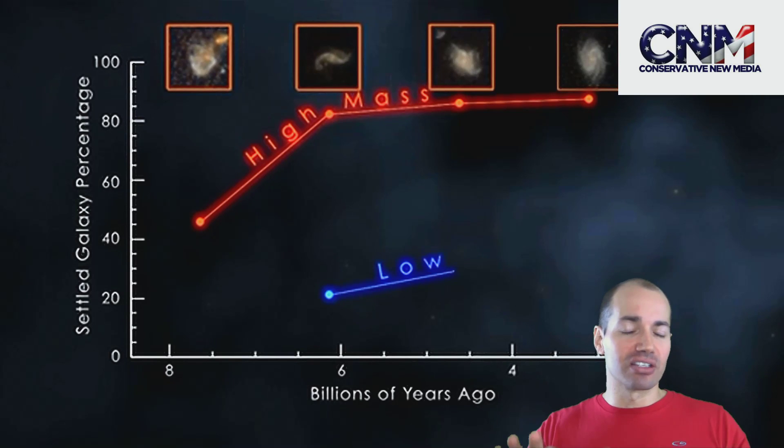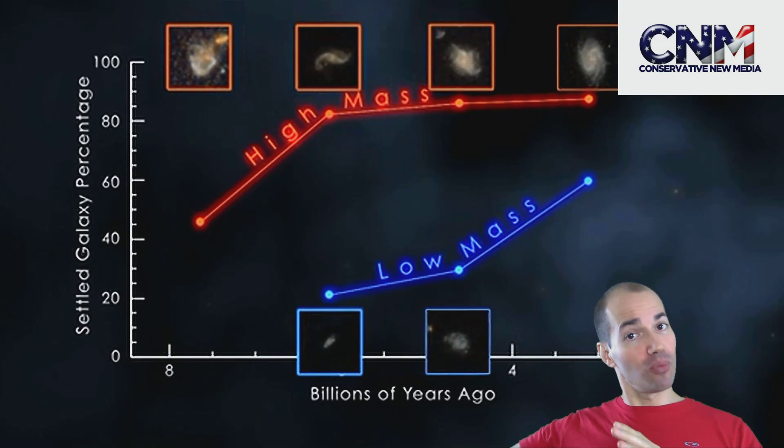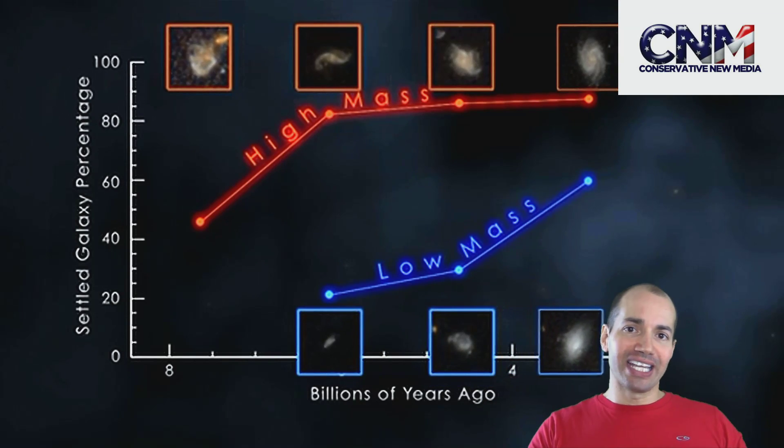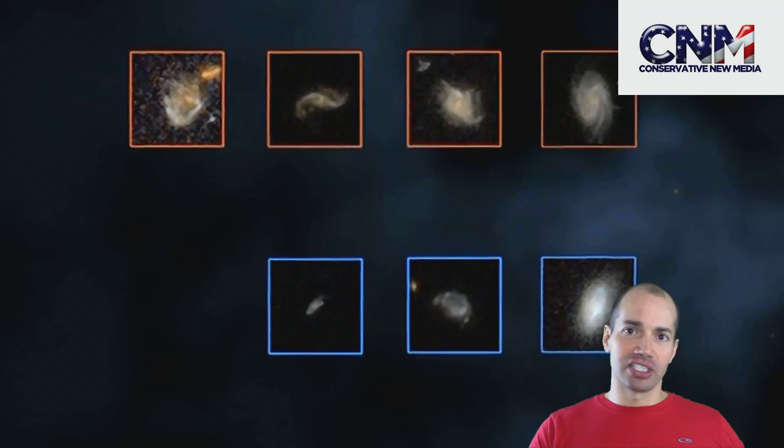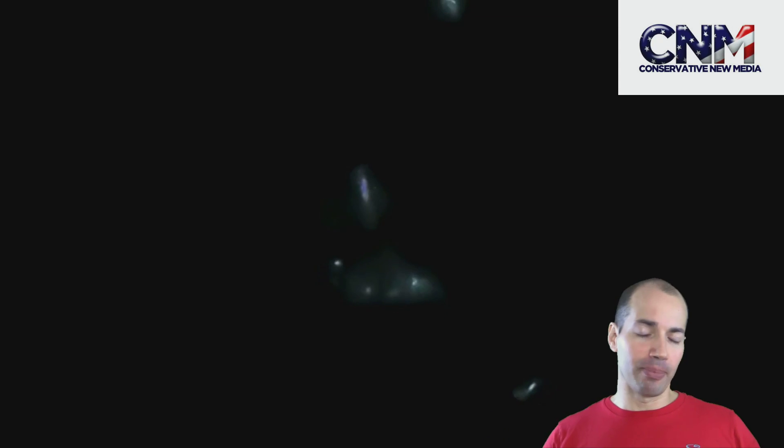that the biggest, most massive galaxies are the most ordered, but then over time they become even more ordered. Similarly, the lower mass galaxies are less ordered than the higher mass galaxies, but they too have a strong spike up in order as time goes on.